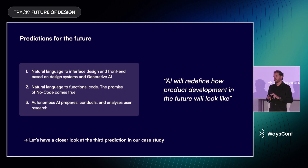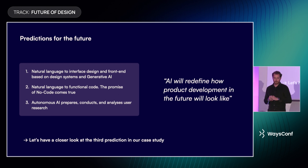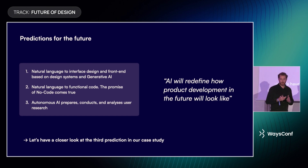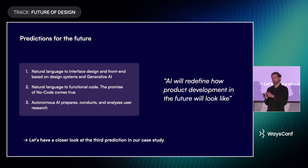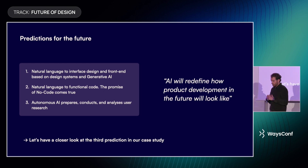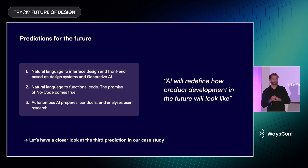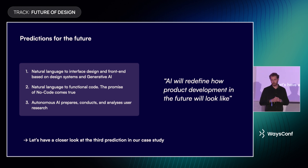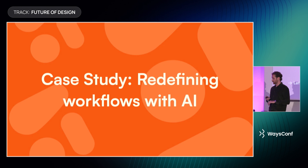For the third prediction, which we will focus on more in the next slides: I think autonomous AI will prepare, conduct, and analyze user research, or at least assist us in doing that. To summarize, AI will redefine how product development is done in the future — let's have a closer look at how that looks.